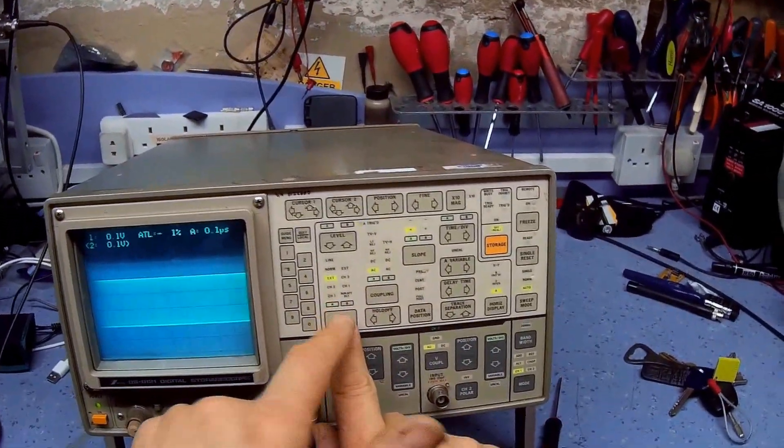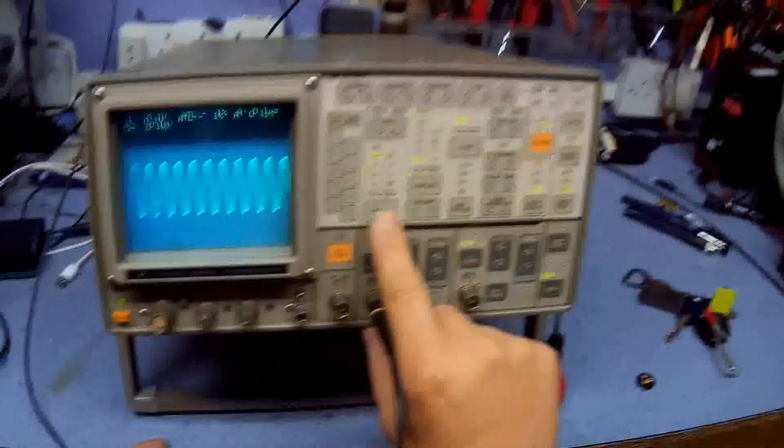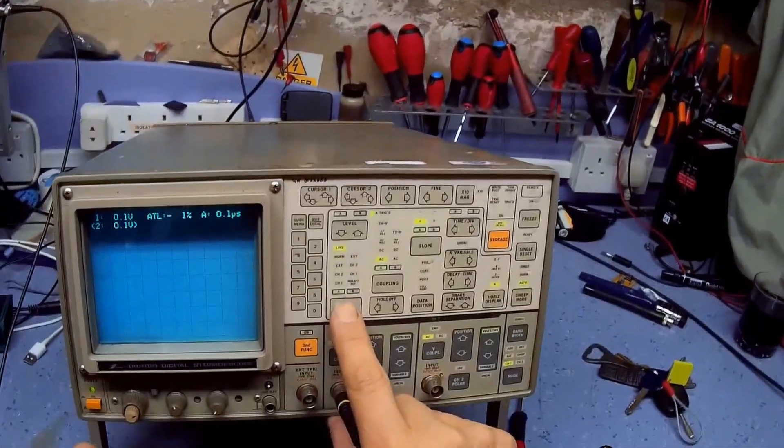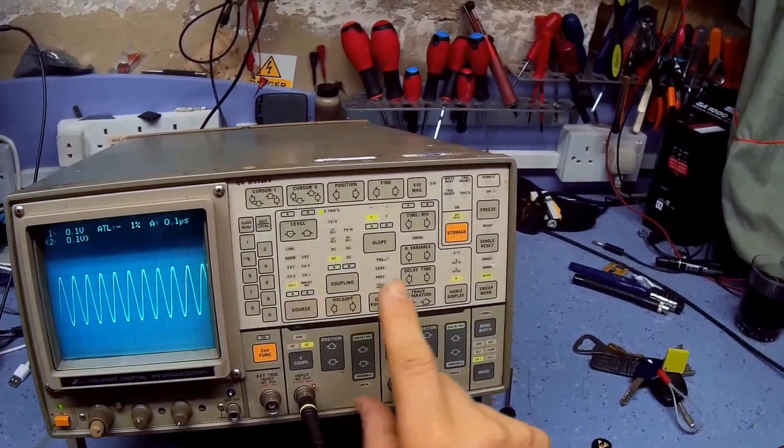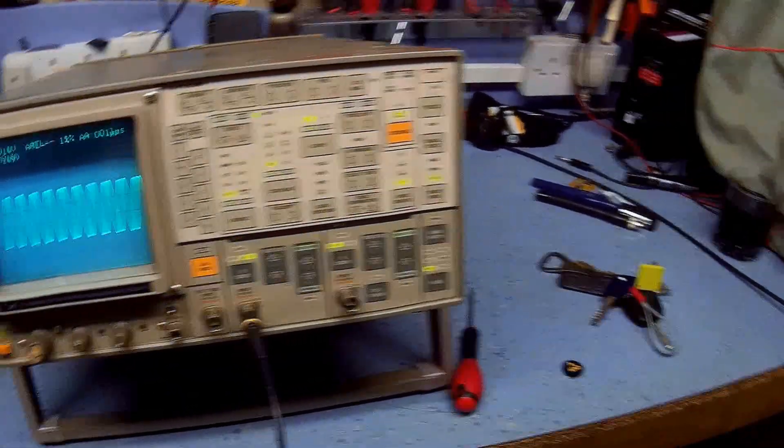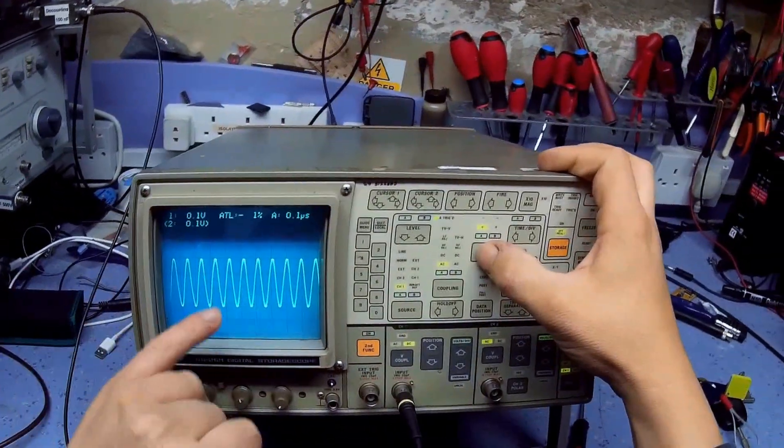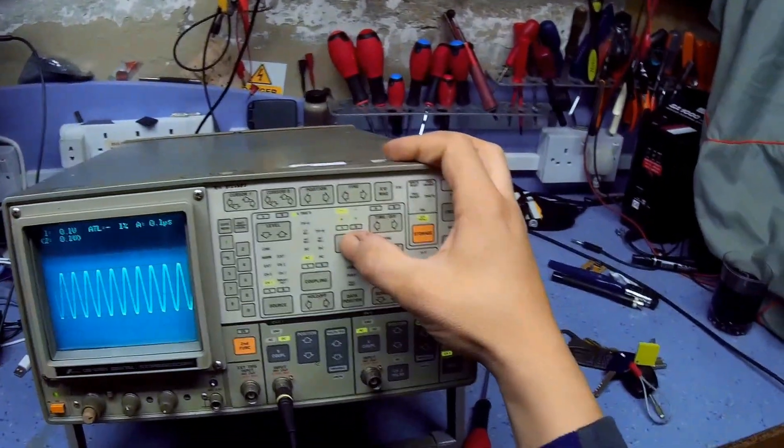We've got channel 2, external trigger, which is this input here, normal trigger, line trigger, where it triggers off the line frequency, and on channel B you've got run after delay, and all those sort of things that I never use anyway. You've got slope, positive and negative slope, so it triggers on the positive going, or the negative going on the slope.